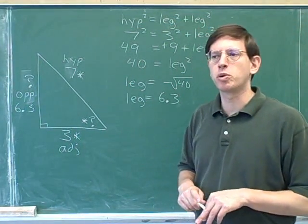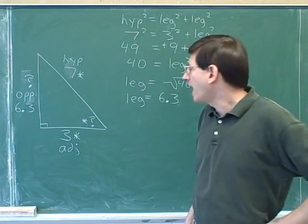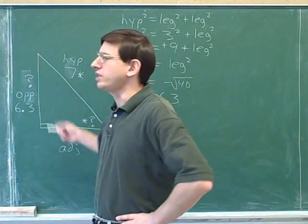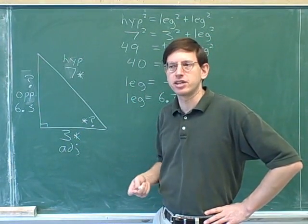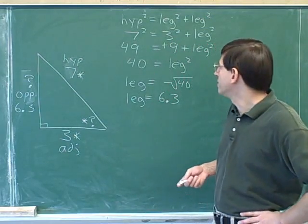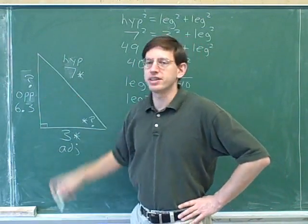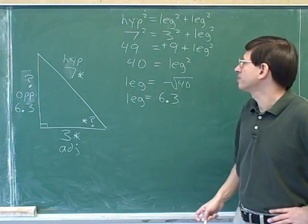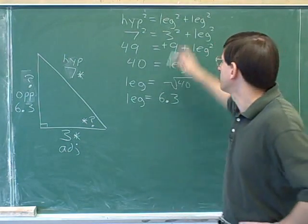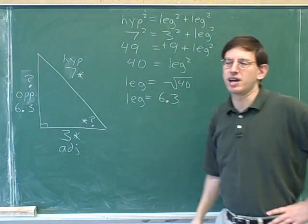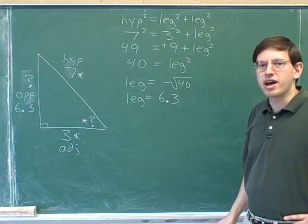So how is this problem different from what we've seen before? Well, on the last few problems, I have been giving you the two legs, and then you had to find the hypotenuse. Previously, I was giving you the two legs, and you had to find the hypotenuse. But on this problem, I gave you one leg and the hypotenuse, and you had to find the other leg. You can see that on this problem, we were given a leg and the hypotenuse, and we had to find the other leg. Whereas on the previous problems, I gave you the two legs, and you had to find the hypotenuse. So we can use Pythagorean theorem pretty easily for either type of problem.